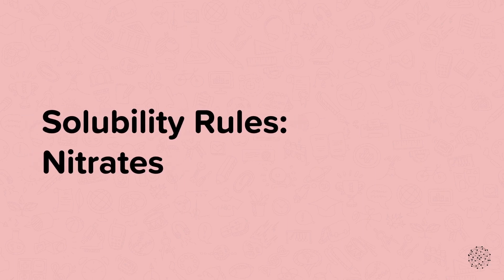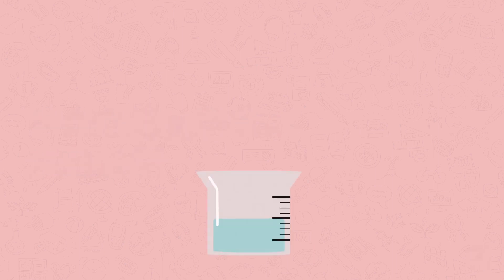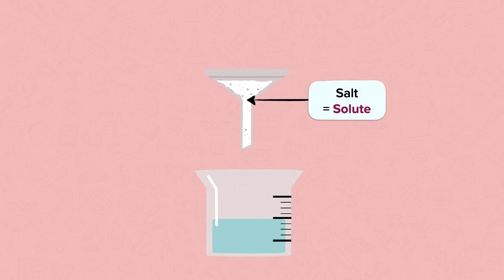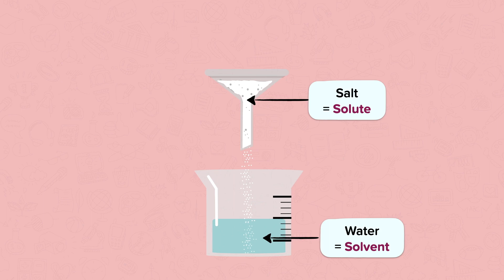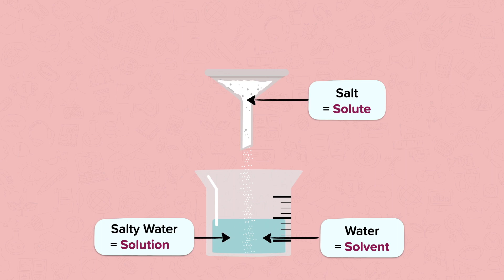In this nugget we will be looking at the solubility rules of nitrate salts. A solute is a substance that dissolves in a liquid. In this example our solute is a salt. A solvent is a liquid in which the solute will dissolve. Here the solvent is water. When salt is stirred into water, the salt dissolves as it is a solute and water is a solvent. The result is salty water, which is now an example of a solution.